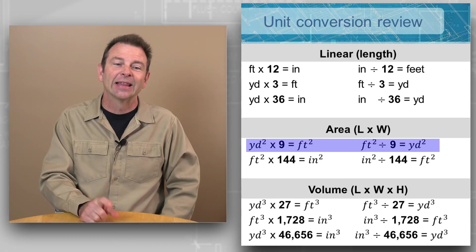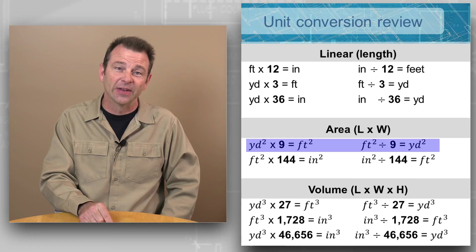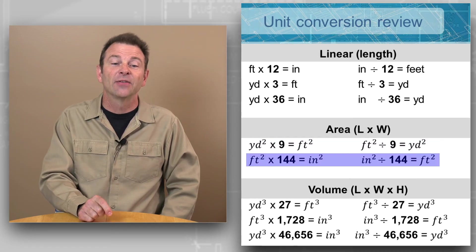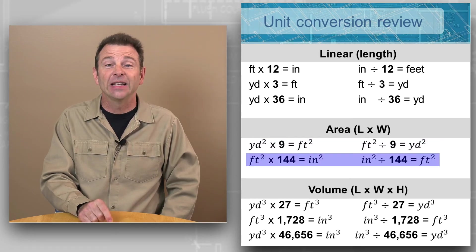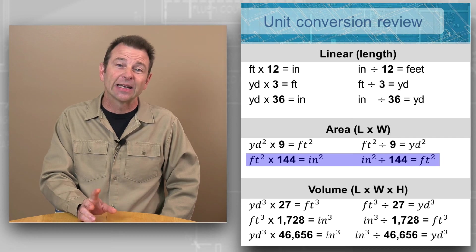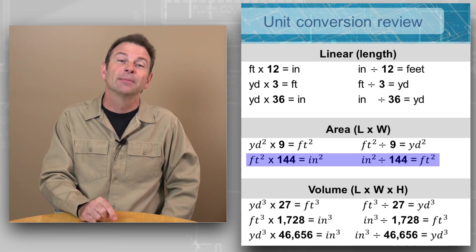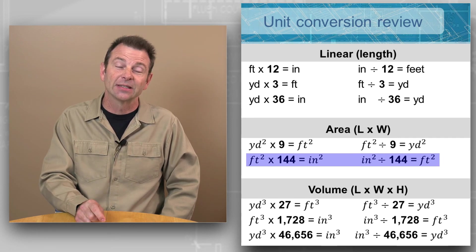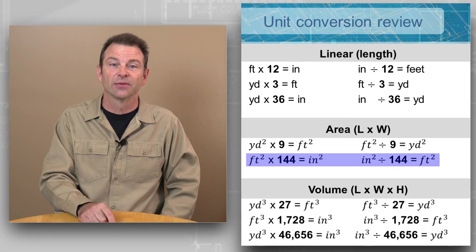That's because there are nine square feet in every square yard. If you're talking about square feet to square inches or square inches to square feet, we can use that number 144 because there are 144 square inches in every square foot.